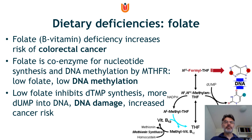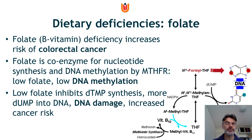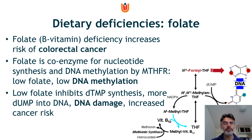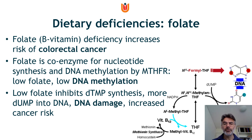Another means by which diet can affect cancer risk is through dietary deficiencies. The example of folate, which is a B vitamin: when it is deficient, it increases the risk of colorectal cancer. Folate is a coenzyme for nucleotide synthesis and DNA methylation by MTHFR (methylenetetrahydrofolate reductase). Low folate leads to low DNA methylation, which is a mechanism for cancer risk. Low folate also inhibits dTMP (thymine monophosphate) synthesis, causing more uracil to be built into the DNA, which causes DNA damage and increases cancer risk.